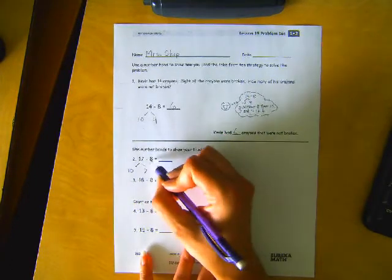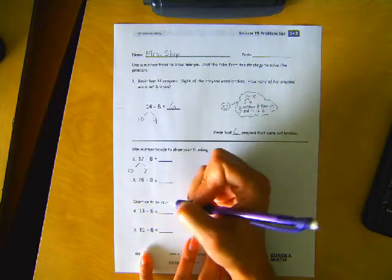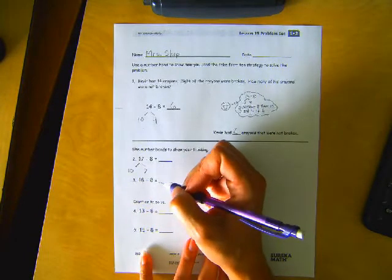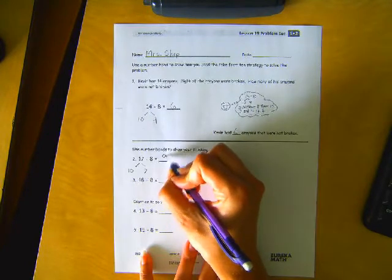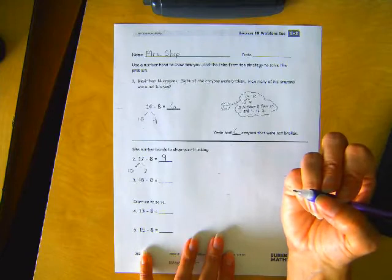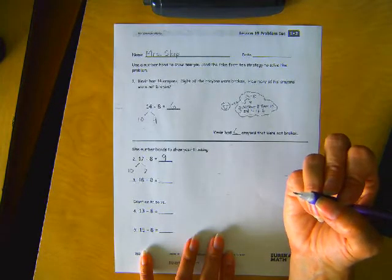We're going to take away the 8 from the 10, which leaves us with 2 and 7. So 2 and 7 make 9, right?